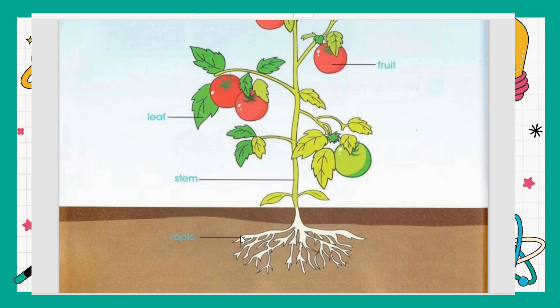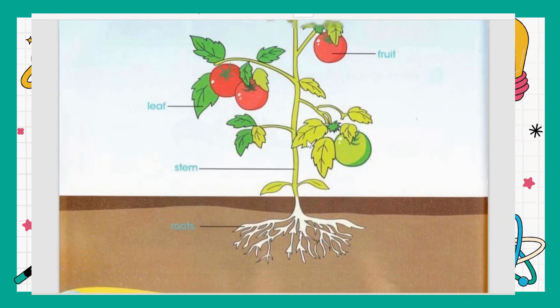The roots absorb water from the soil and carry it up to the stem. Then one of the main functions of the stem is to keep running water into the branches, into the fruits, and into the leaves, so they can produce great fruit and stay fresh.